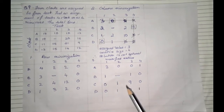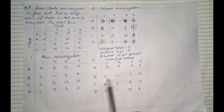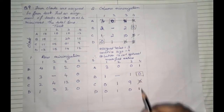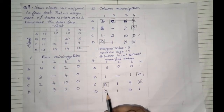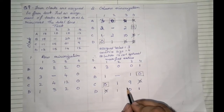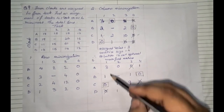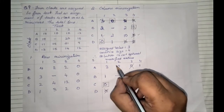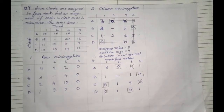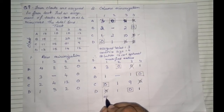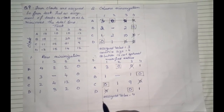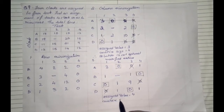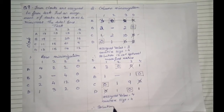Once the modified matrix is ready, we start the assigning process again. First row has 2 zeros — cannot assign. Second row has only 1 zero — assign it; all other subsequent zeros get crossed out. Third row has only 1 zero — assign it; remaining zeros get cut off. Fourth row has 1 zero — mark it. Column wise: second column has only 1 zero — assign it. The number of assigned values is 4 and the matrix size is also 4, therefore the solution is optimal.